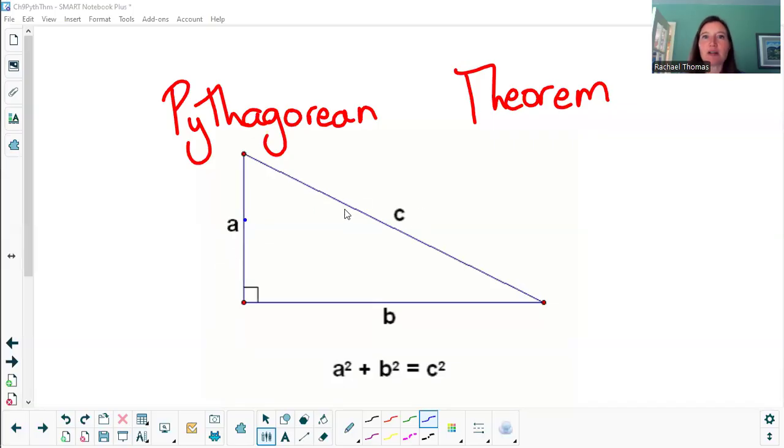Hi folks! Welcome to One Minute Math. Today we're talking about the Pythagorean Theorem, which you might know better as a squared plus b squared equals c squared.